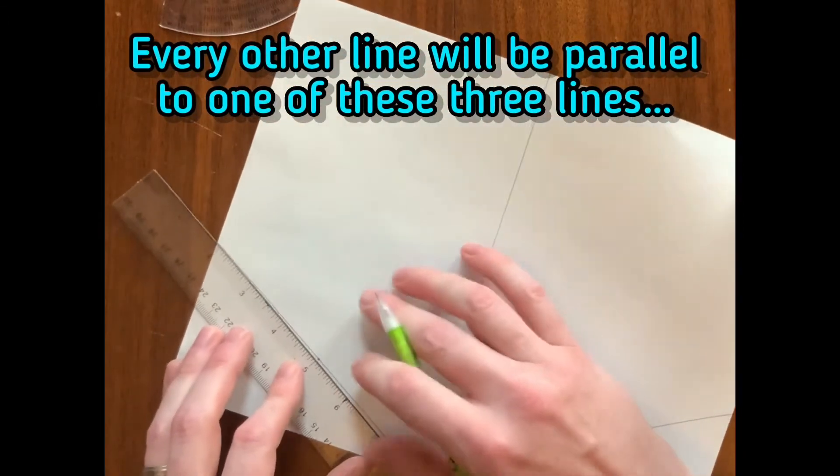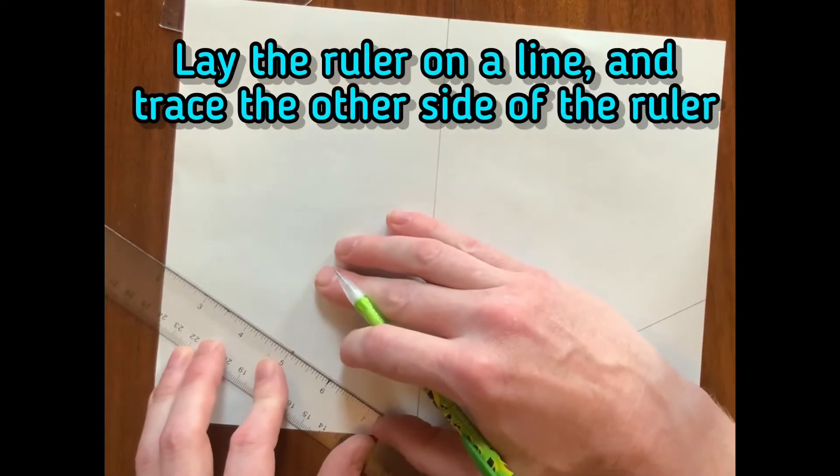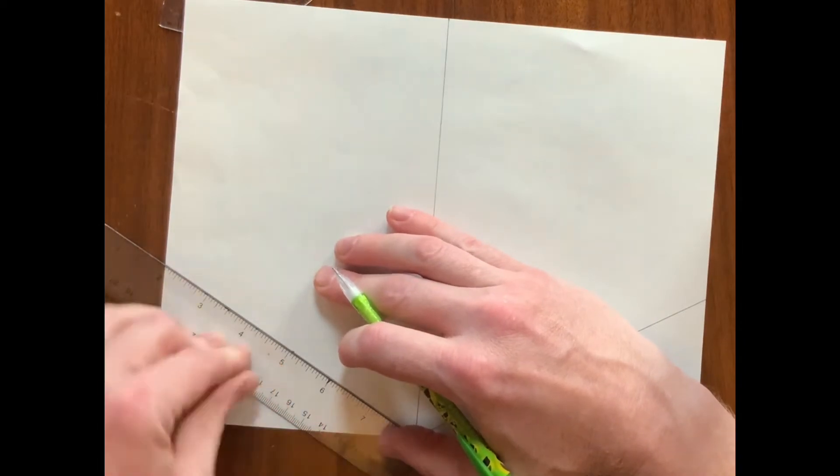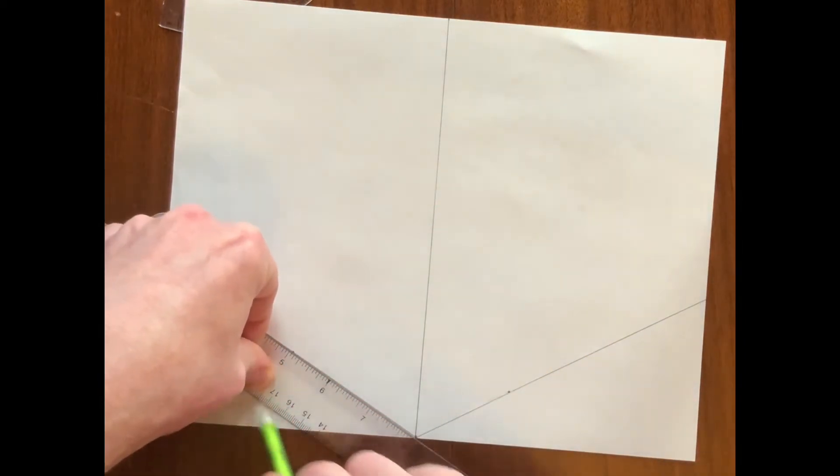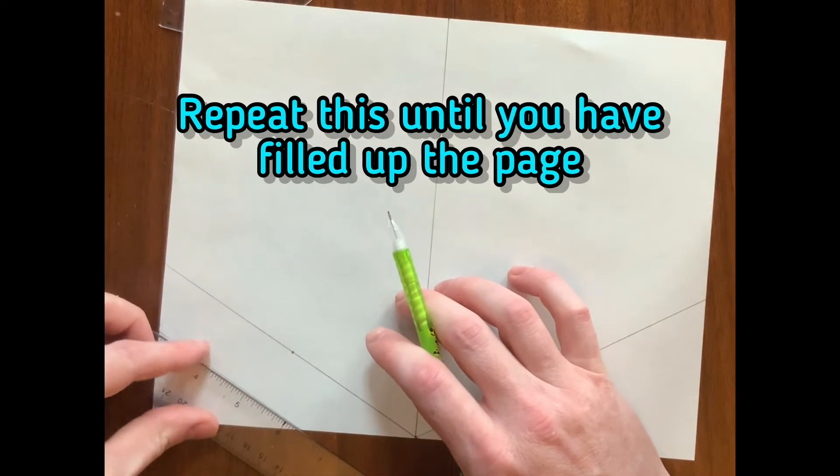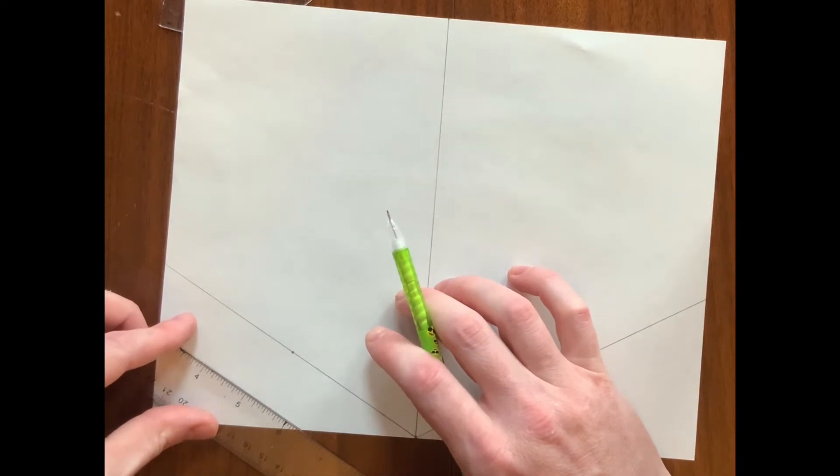Every other line will be parallel to one of these lines. Lay the ruler on a line and trace the other side of the ruler. Repeat this until you've filled up the page.